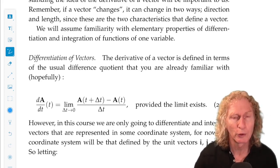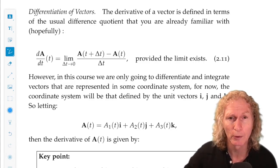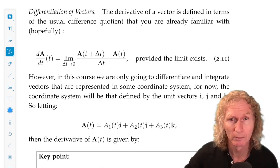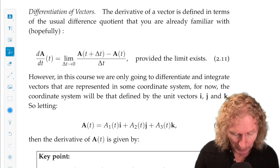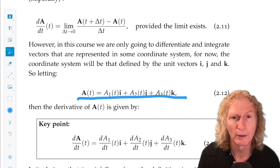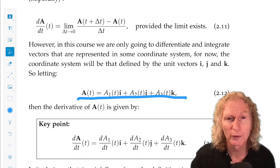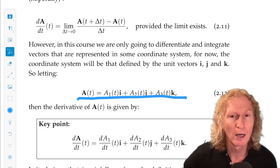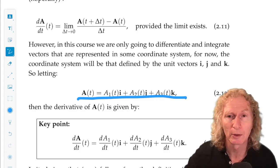We could define a vector in the usual way with a difference quotient. It looks exactly the same. And the important thing is we can divide by a scalar, delta t. And when a of t is expressed in Cartesian coordinates, then the derivative is just the derivative of the components, because i, j, and k do not depend on time.